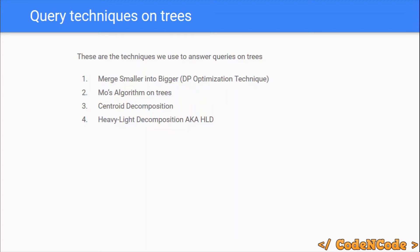Mo's algorithm can answer both types of tree queries. The first type asks for some answer along the path from node A to node B — these are path queries. The second type asks about a subtree. Mo's algorithm is capable of answering both path queries and subtree queries.